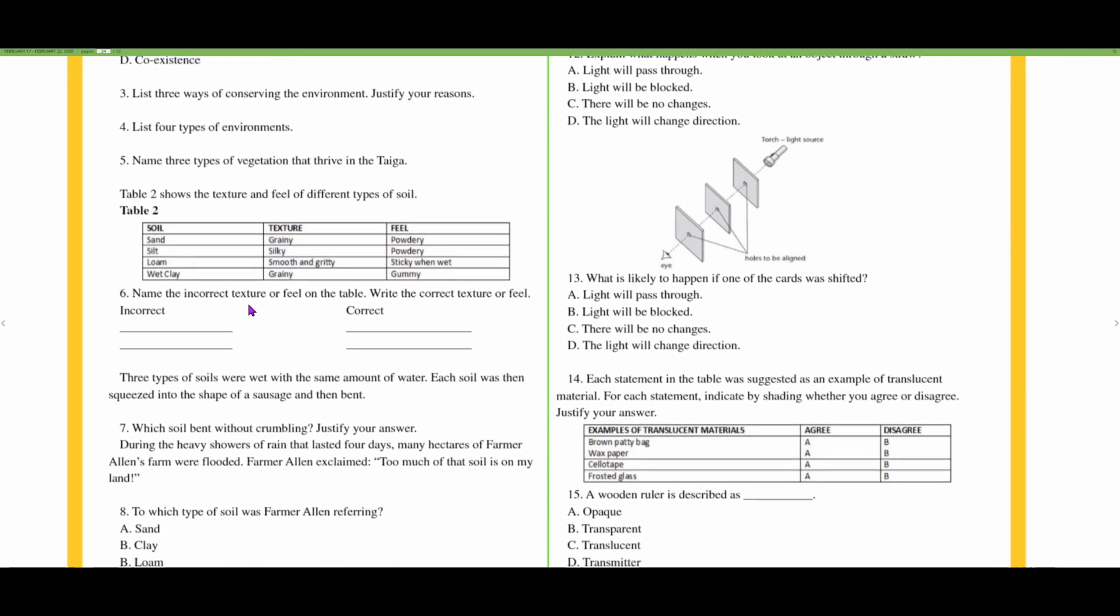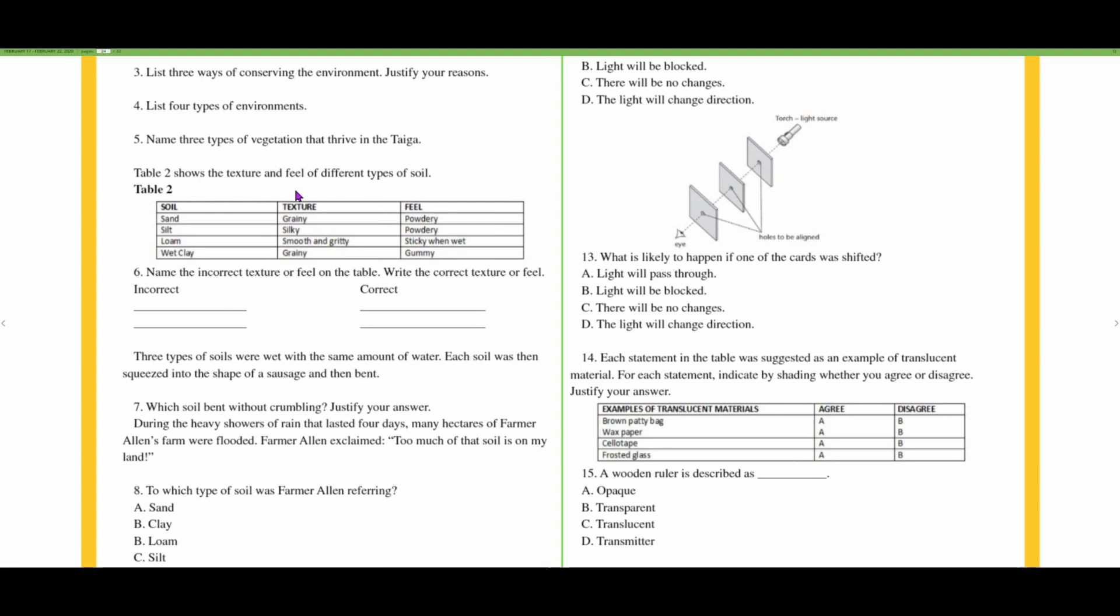Table two shows the texture and feel of different types of soil. We have soil texture and feel: sand is grainy and powdery, silt is silky and powdery, loam is smooth, gritty and feels sticky when wet, and wet clay is grainy and gummy.